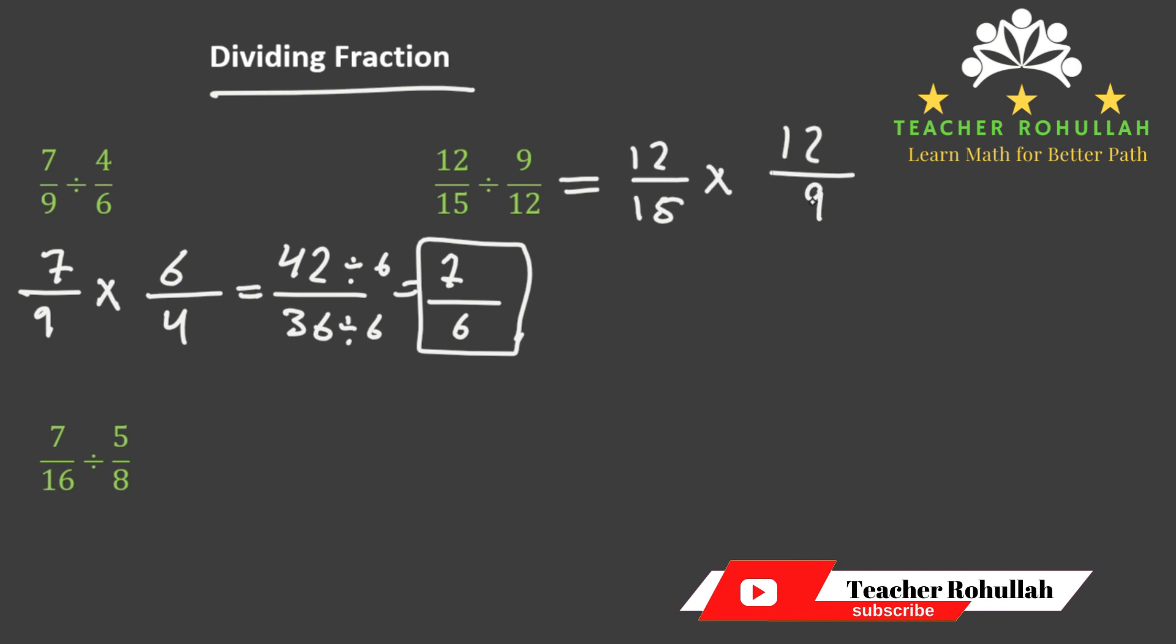We can even simplify here also because they are being multiplied. So we can write 3 times 3 is 9, and 4 times 3 is 12. 5 times 3 is 15.